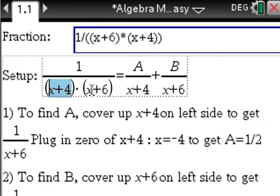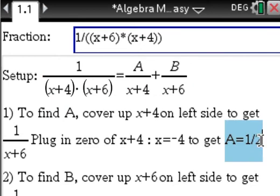So negative 4 plus 6 is 2. So we'll end up with 1 over 2 on the left side. So our factor a is 1 over 2, 1 half. How cool is that?